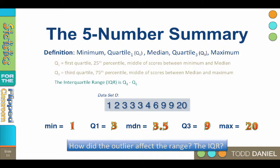We can see that the outlier affects the range, but not the interquartile range. If you are particularly clever, you may recognize that the five number summary gives you the same information as a box plot. The box plot is the graphic representation of the five number summary.